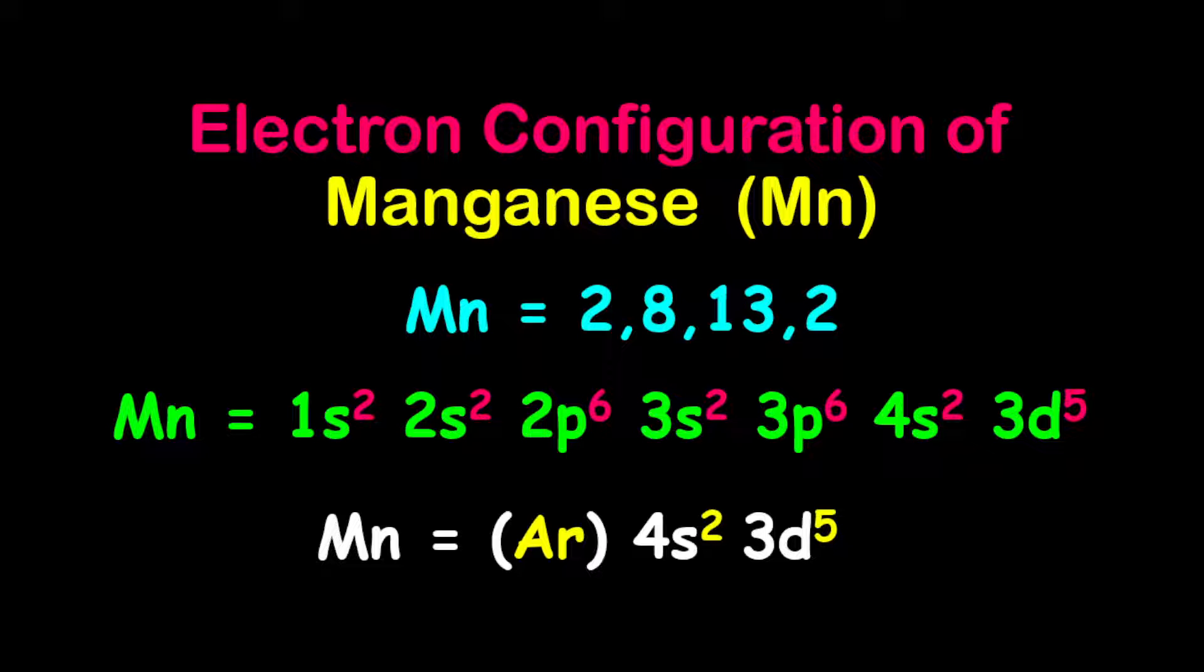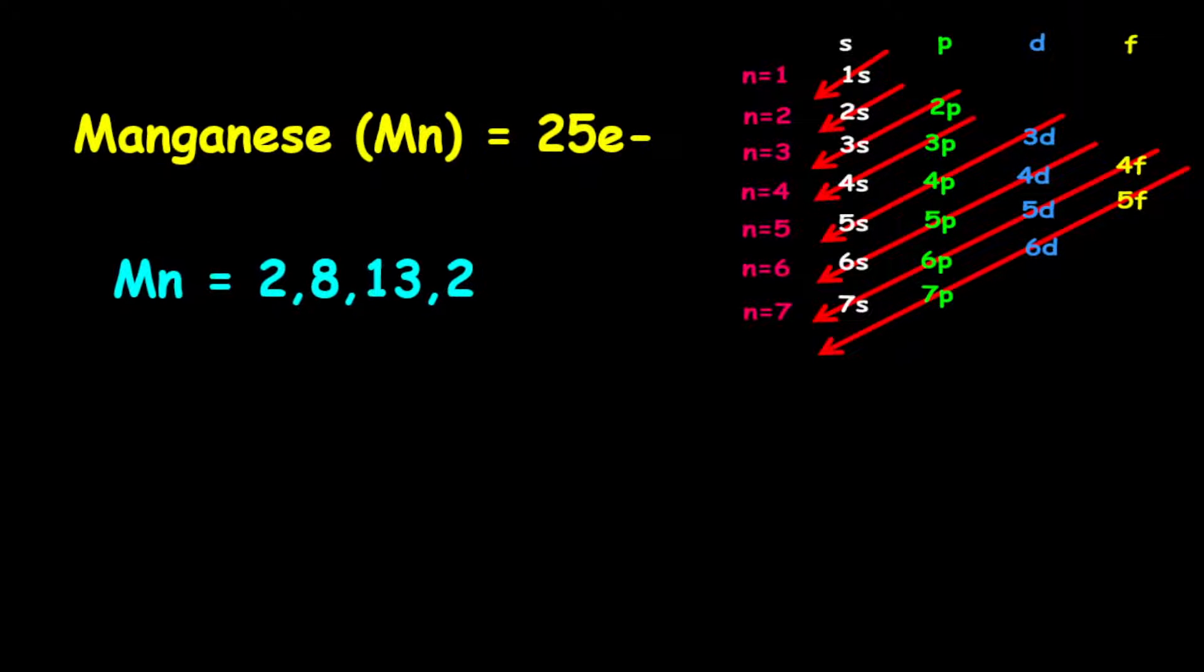The electron configuration of manganese. Manganese has 25 electrons.